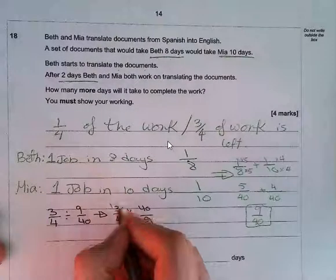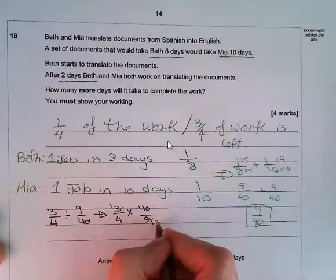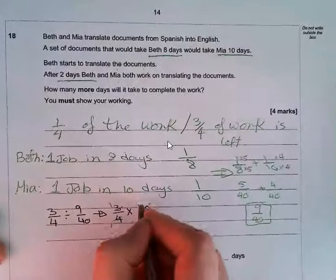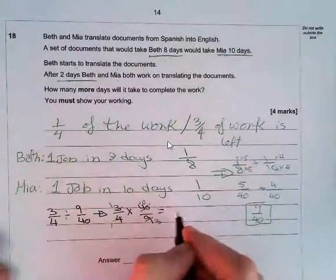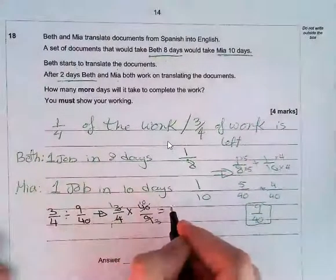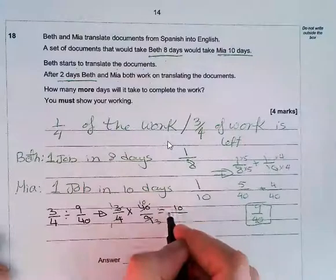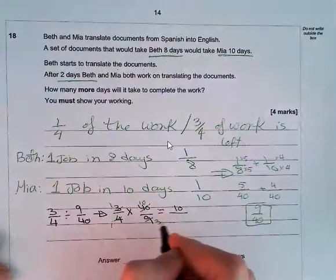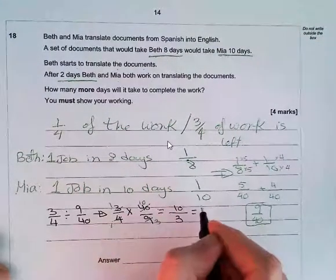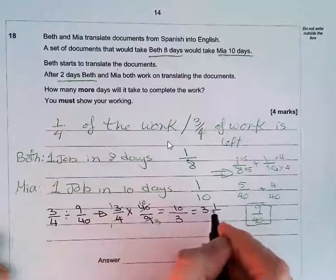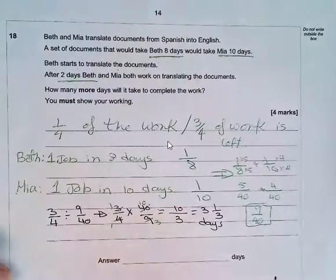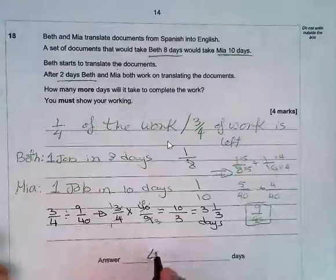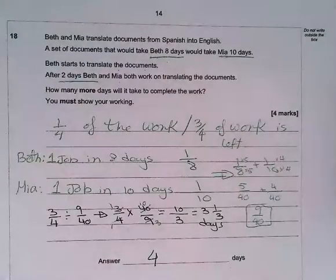Simplifying: divide three and nine each by three to get one and three, divide four and forty each by four to get one and ten. So this equals one times ten over one times three, which is ten over three. That means they need three and one-third days — so around four days to complete the remaining work.